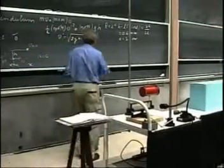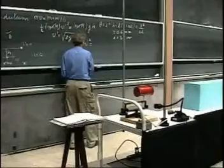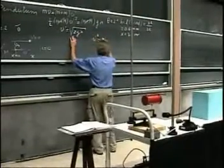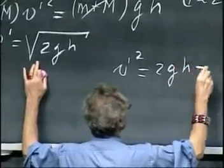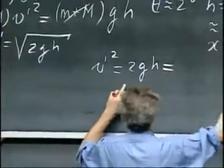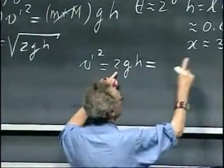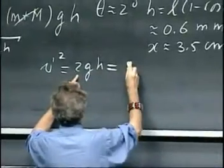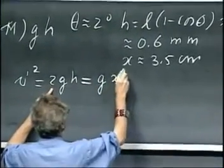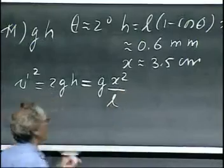In other words, v prime squared, which is 2gh, can now be replaced by approximately 2g times x squared divided by 2L, which is g times x squared divided by L.